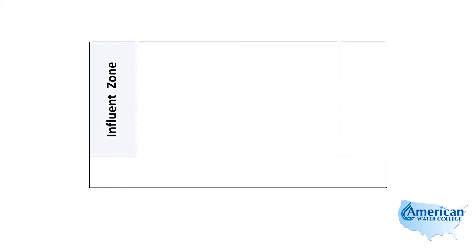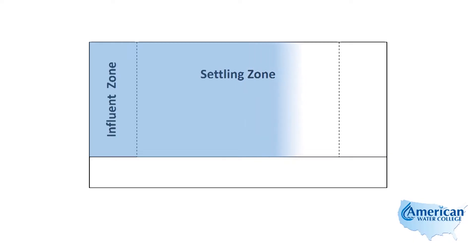Here we have a rectangular sedimentation basin with its influent zone. The first zone of a rectangular sedimentation basin is the influent zone, where water enters the tank. As the water moves through the tank, it enters the settling zone, where settling of particles takes place. At the end of the basin is the effluent zone, where the water leaves the basin.